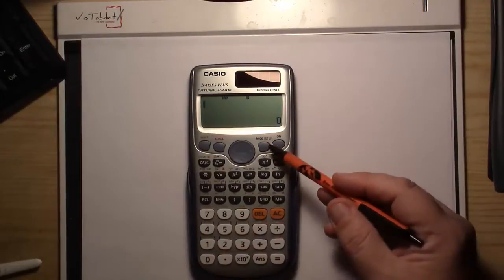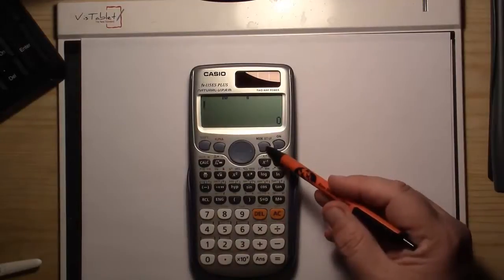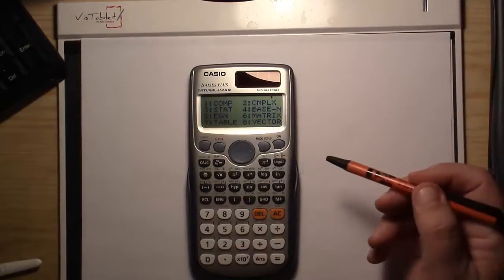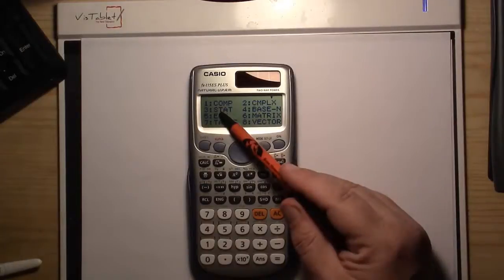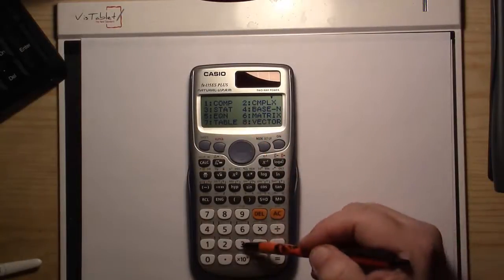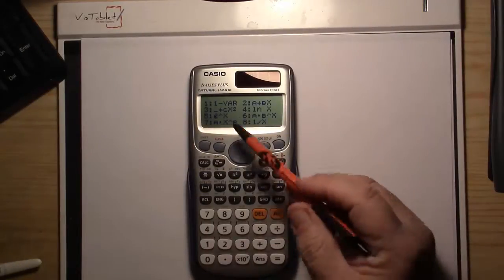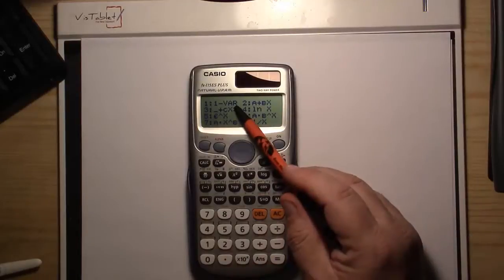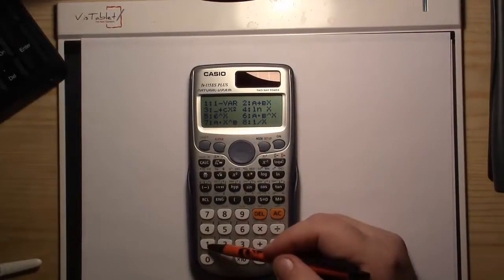First, press mode for the mode setup. Once that comes up, press 3 for statistics. Then choose one variable, which is the first option, so press 1.